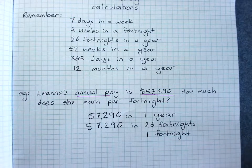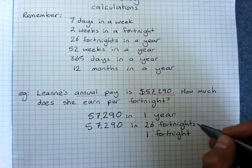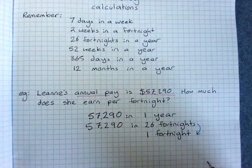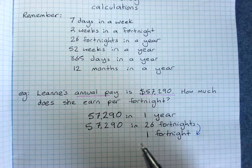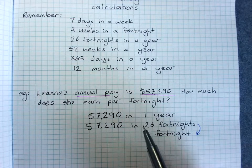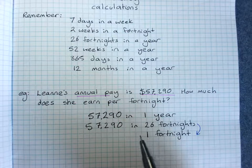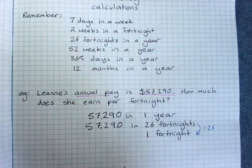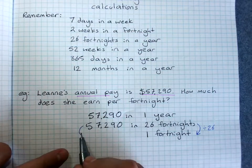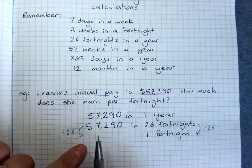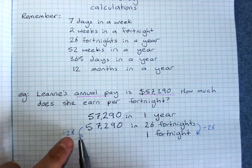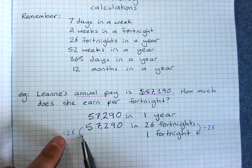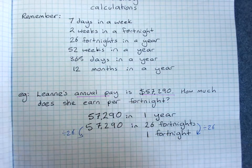The way we do this is we ask: how did I get from 26 to 1? It's always going to be times or divide. Anything divided by itself is 1, so we divide by 26 to get down to one fortnight. We divide by 26 on this side as well — that makes sense because dividing is sharing or splitting, and we're splitting this whole year into 26 bits, which gives the value of one fortnight.